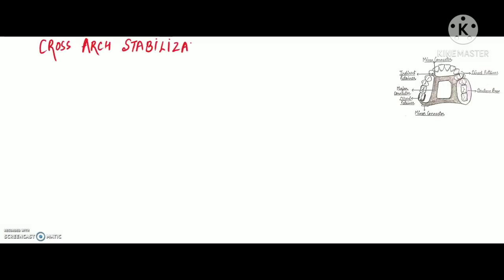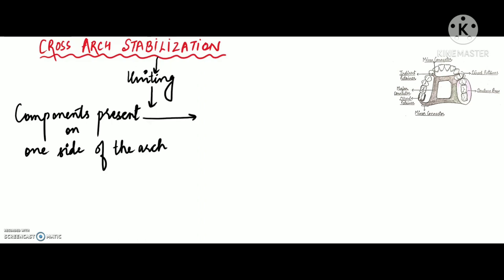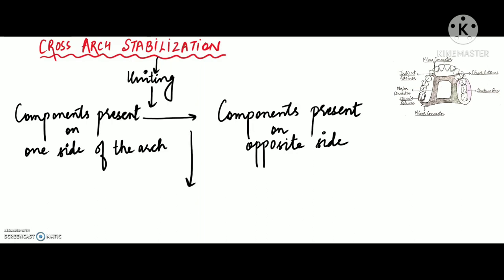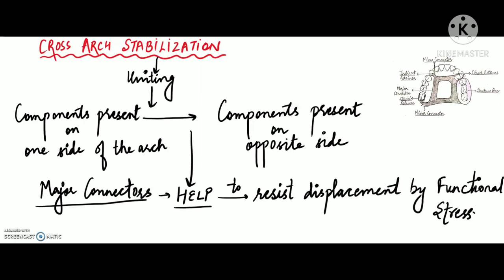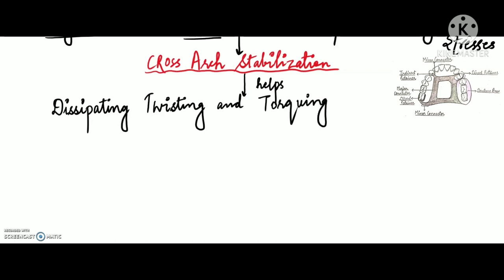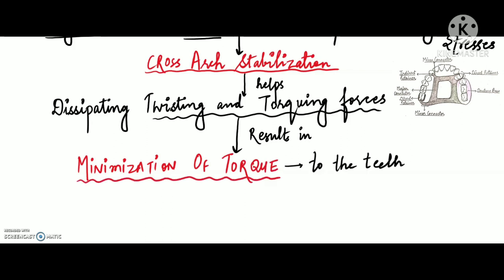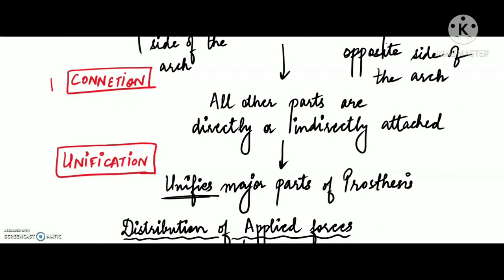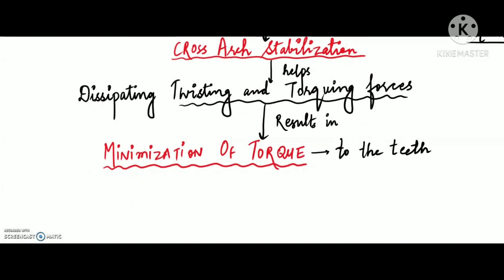The next important function is cross-arch stabilization. By uniting the components on one side of the arch with those on the opposite side, the major connector helps resist displacement by functional stresses, providing cross-arch stabilization and dissipating harmful twisting and torquing forces. This results in minimization of torque to the teeth. To summarize: the functions are connection, unification, stress distribution, cross-arch stabilization, and minimization of torque to the teeth.